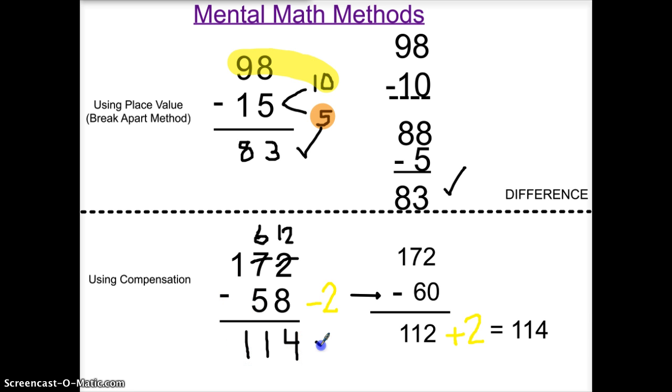6 minus 5 is 1. 1 minus 0 is 1. I've gotten the same answer using regrouping and compensation. Only compensation is easier to do in my head, just like the break apart method. I hope this has been helpful for you.